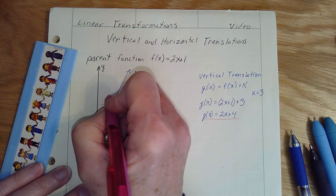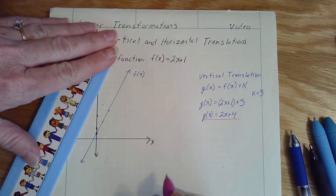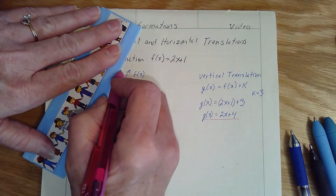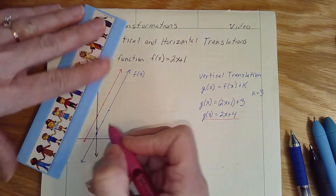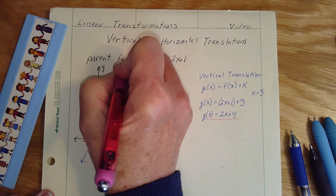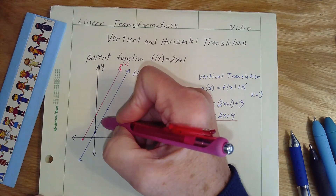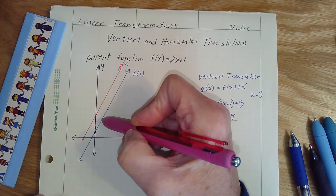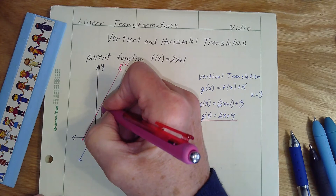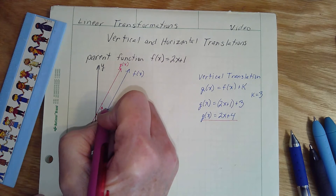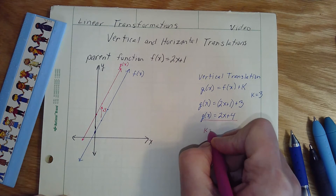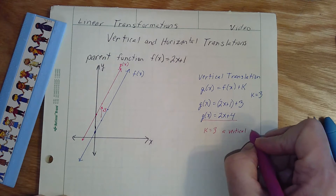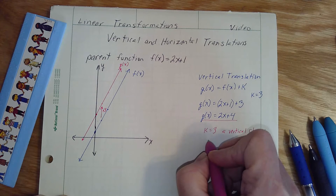So up 2 over 1. I am going to be plotting a line parallel to my initial line, parallel to my parent function. This is my g of x. We can see looking at this, this point goes from 1 to 4 — that's a vertical change of 3. This point is at 3 and it moves to 6. So we have simply slid our line up 3. k equals 3, a vertical change of 3.